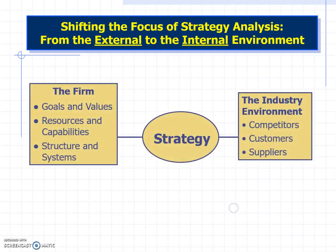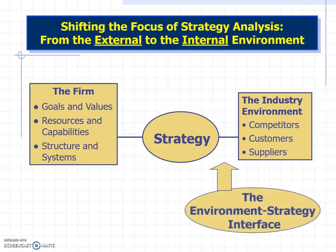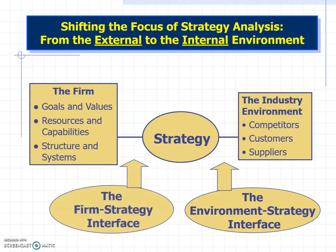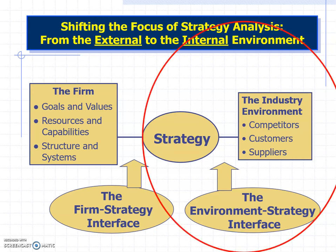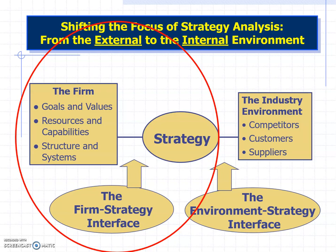Up until now in the class, we've focused on the industry environment — the competitors, customers, suppliers — and how that influences the development of strategy. We call it the environment-strategy interface, and that's where we spent most of our time. There's also the firm-strategy interface, though. Now we're going to focus on the firm itself: their goals and values, the resources and capabilities, and the structures and systems that allow those resources and capabilities to be turned toward competitive advantage.